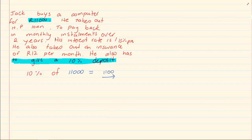Or you could say 10 over 100 times 11,000. That will give you 1100. This is our deposit.